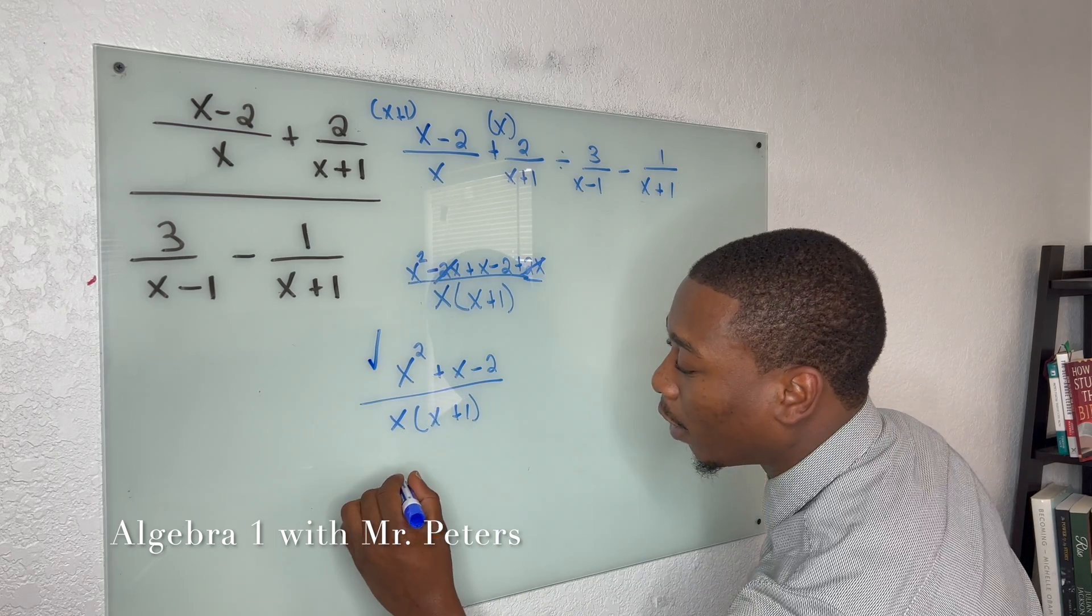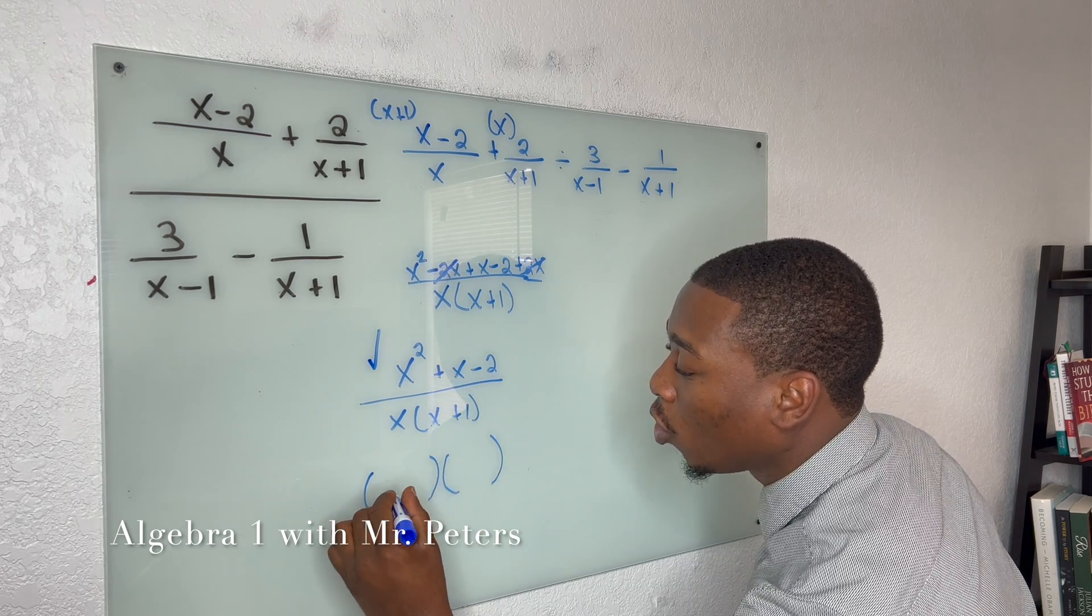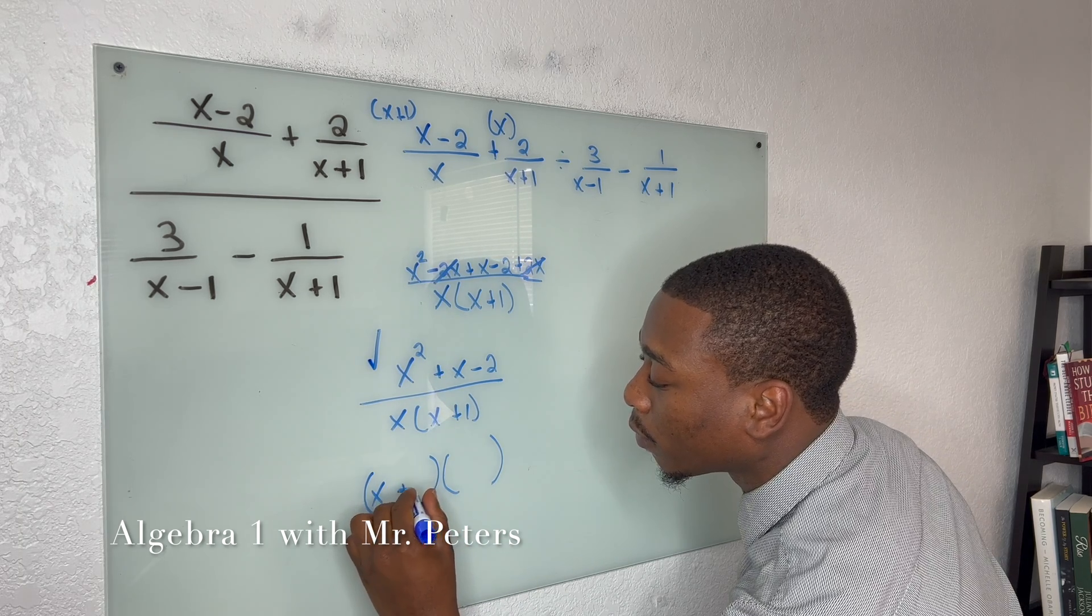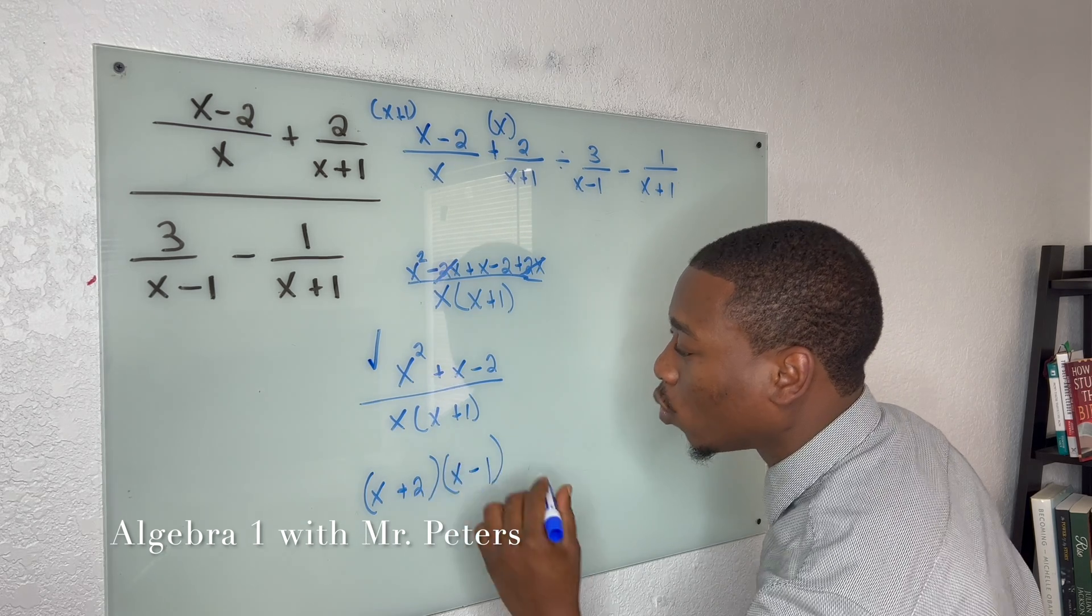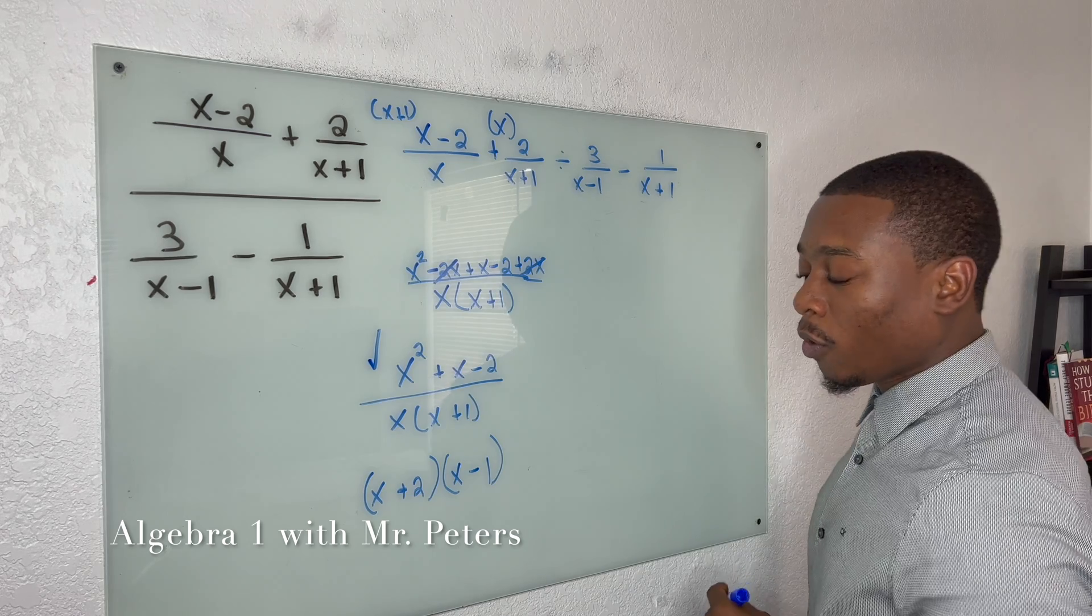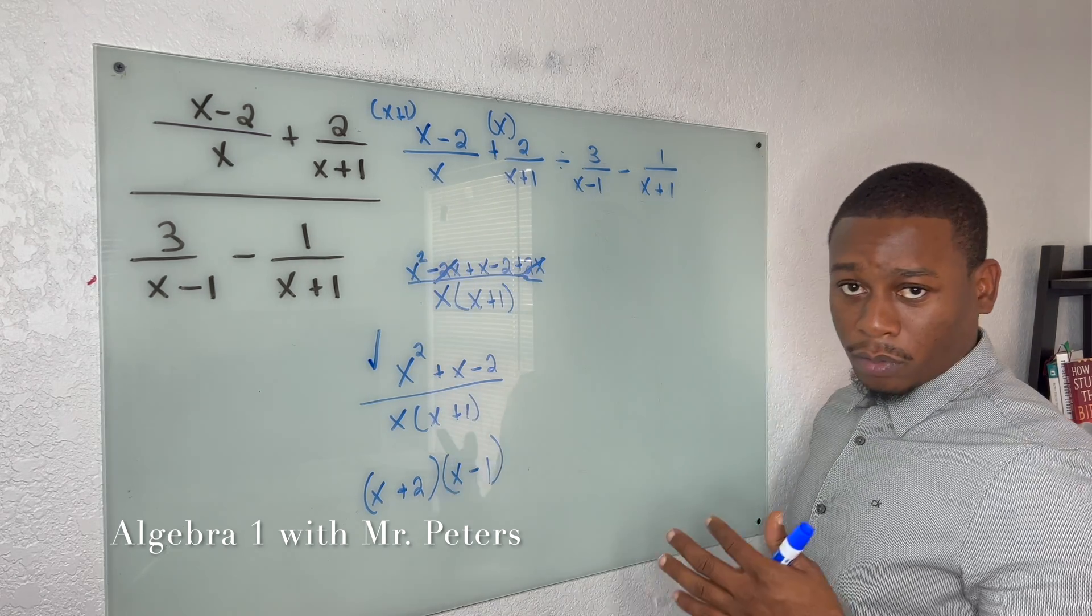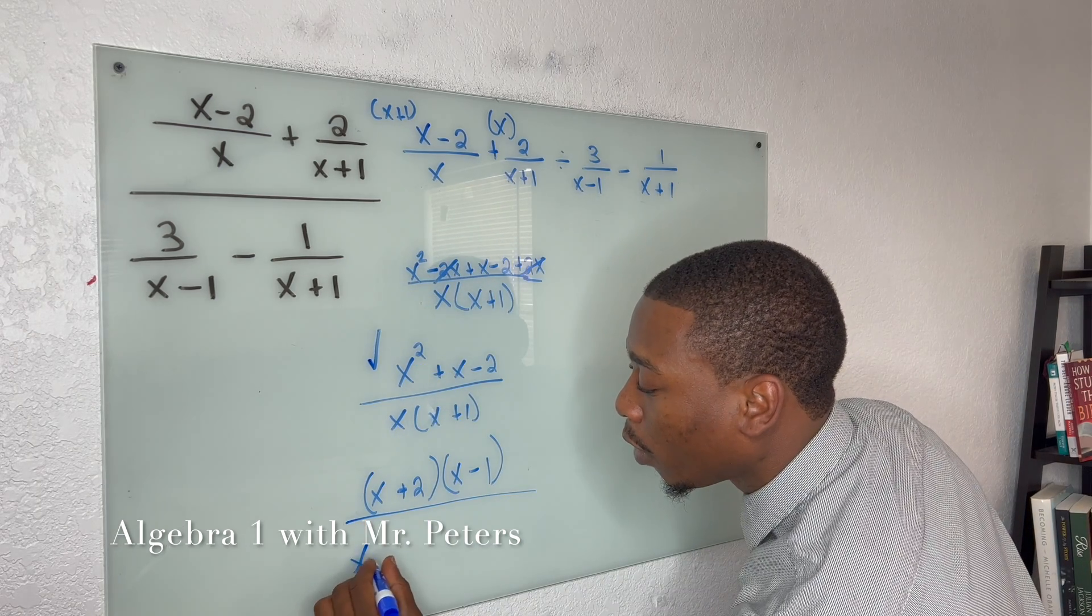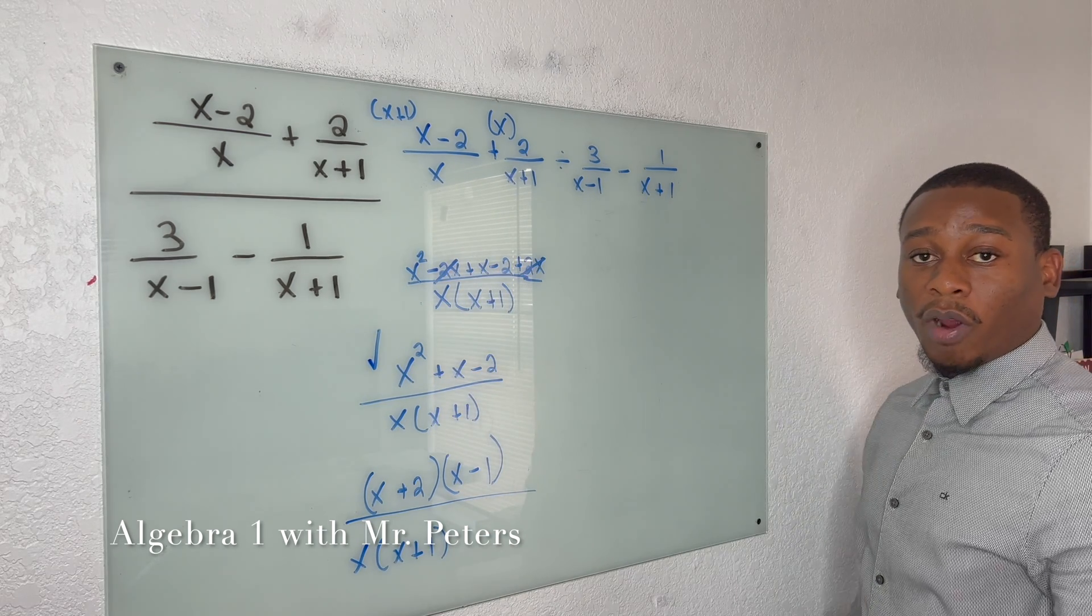So let's break it down. And once we break it down to our two binomials, we're going to get x plus 2, x minus 1. And once we do this now, guys, we're now going to put this over our denominator, and we're going to focus on the second half of the part of the problem.